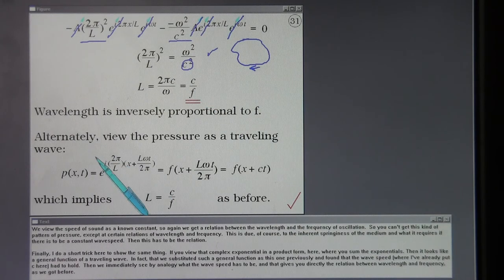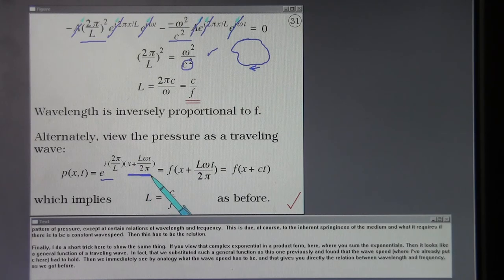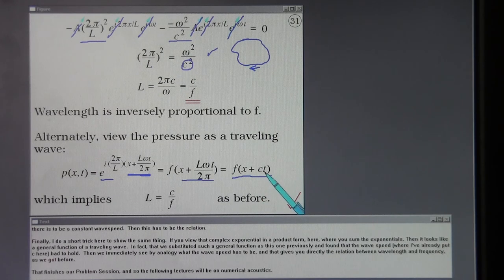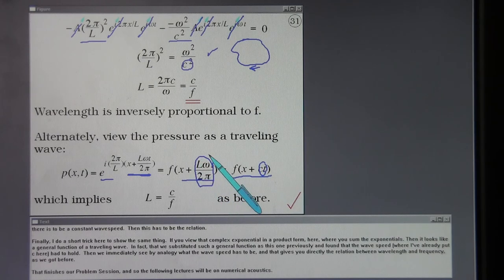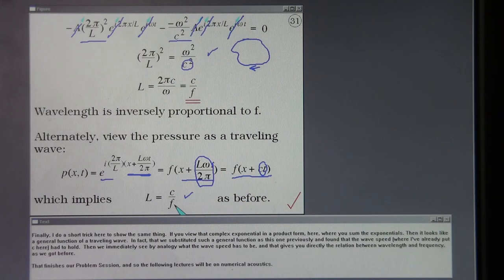Finally, I do a short trick here to show the same thing that if you view that complex exponential in a product form here where you sum the exponentials, then it looks like a general function of a traveling wave. In fact, knowing that we substituted such a general function as this one previously and found that the wave speed where I've already put c here had to hold, then we immediately see by analogy what the wave speed has to be and that gives you directly then the relation between wavelength and frequency as we got before. That finishes our problem session and so the following lectures will be on numerical acoustics.